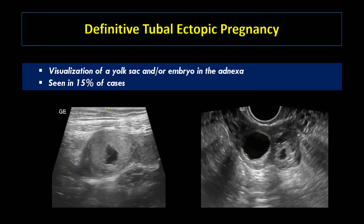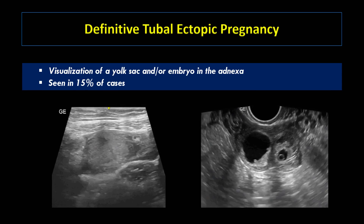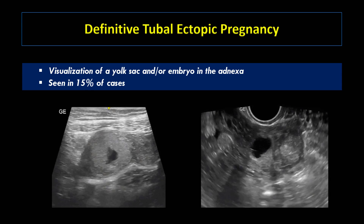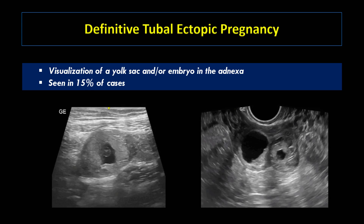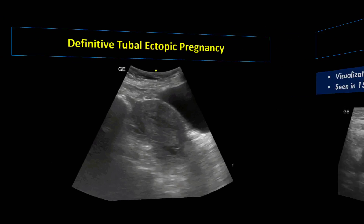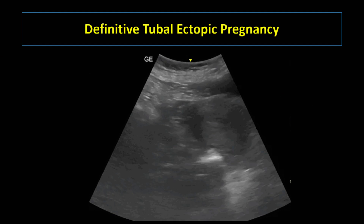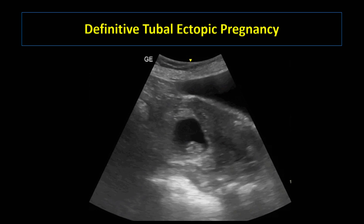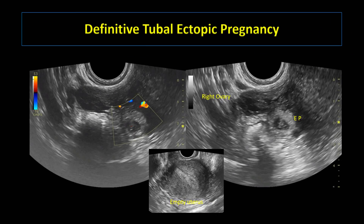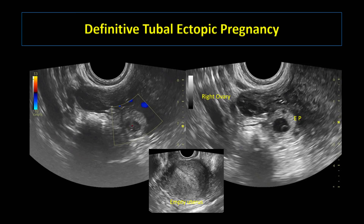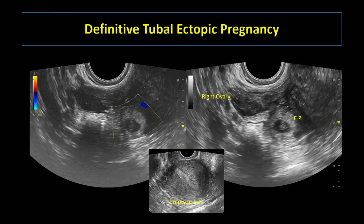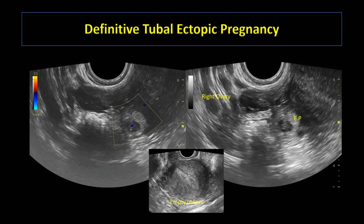The definitive diagnosis of ectopic pregnancy can be made with ultrasound visualization of a yolk sac and/or embryo in the adnexa, seen in about 15% of cases. These are two different cases of definitive tubal ectopic pregnancy — both show a yolk sac inside the ectopic gestational sac confirming the diagnosis. Another case shows an ectopic gestational sac containing an embryo with positive cardiac pulsations. In yet another case, the ectopic gestational sac is located medial to the right ovary, containing a yolk sac and fetal pole with active cardiac pulsations confirming ectopic pregnancy.